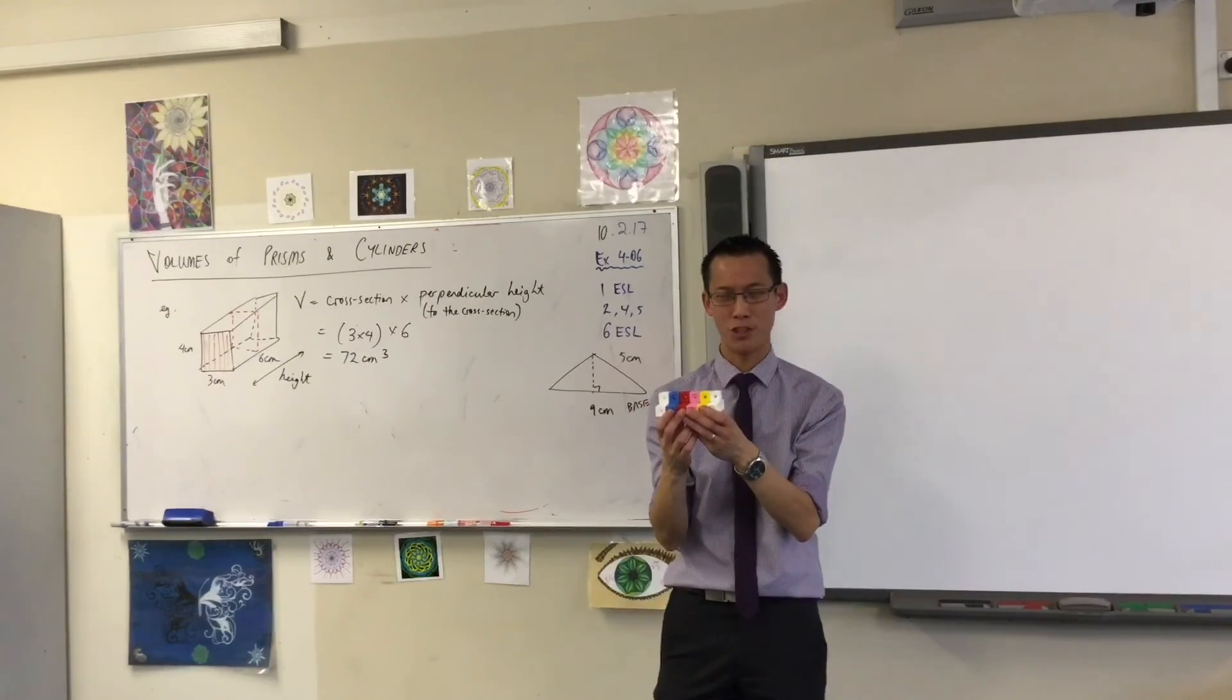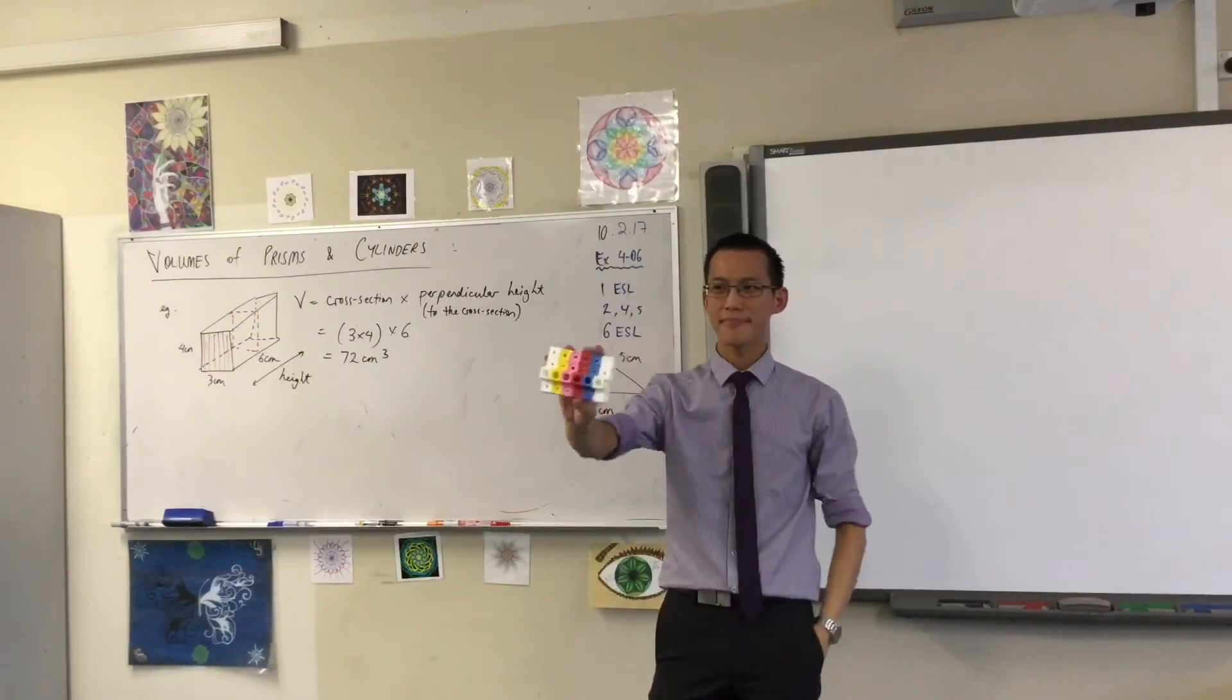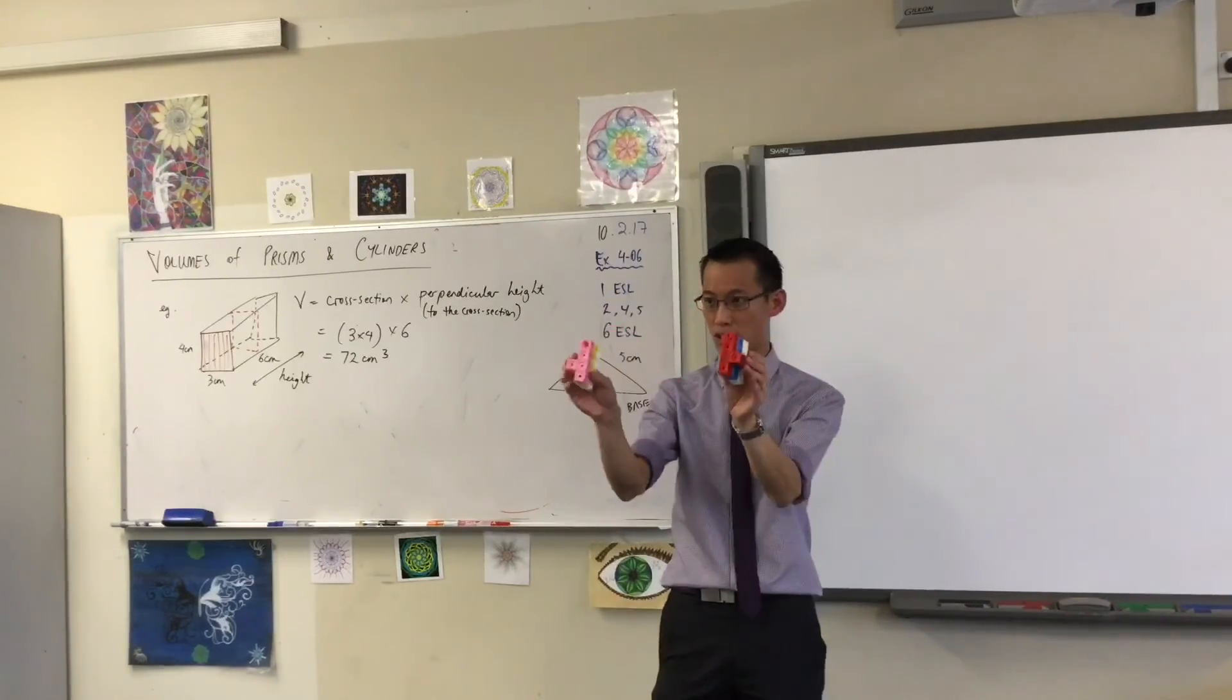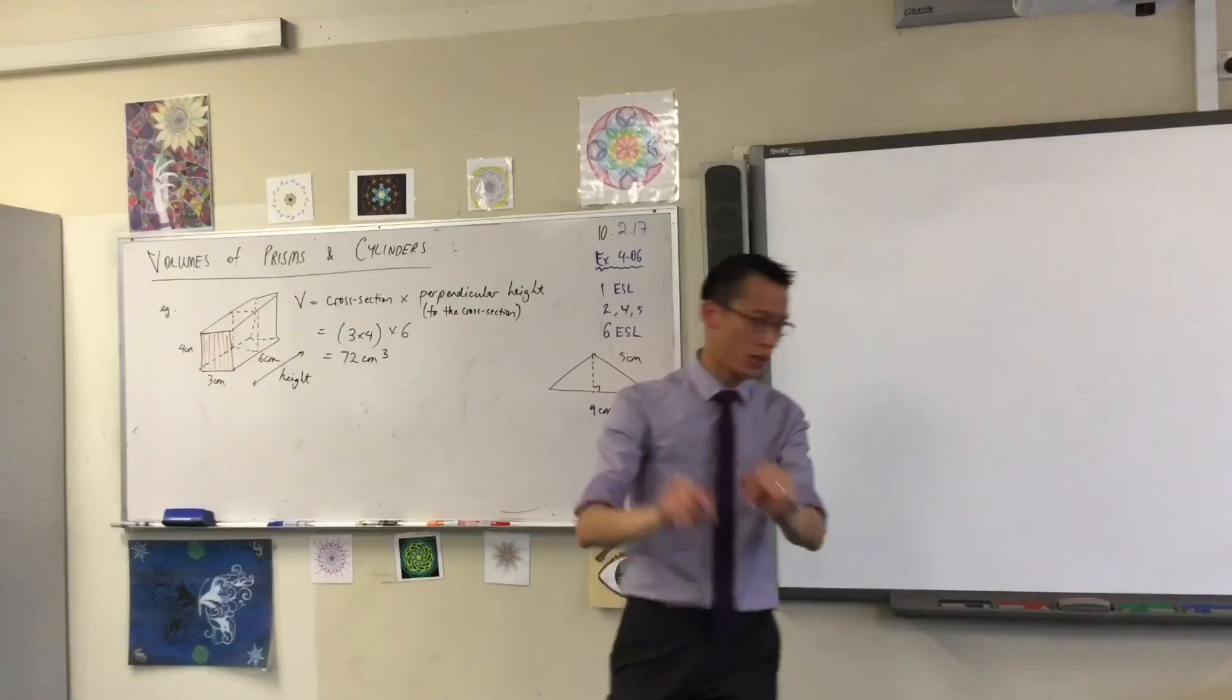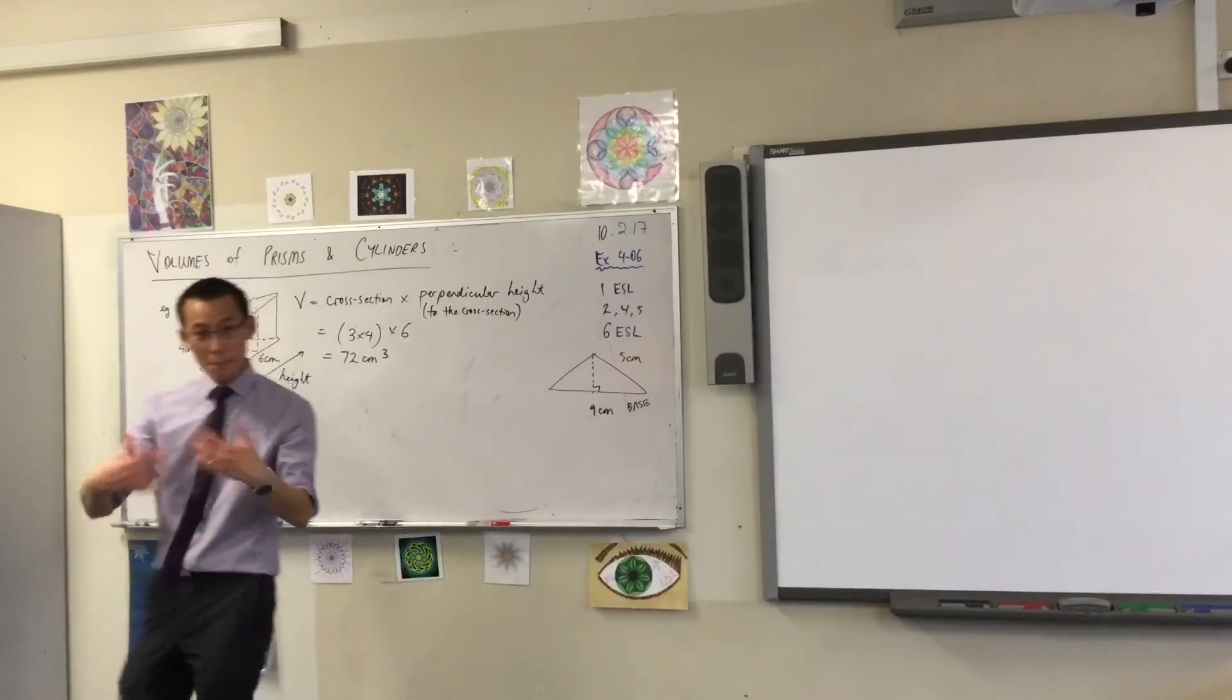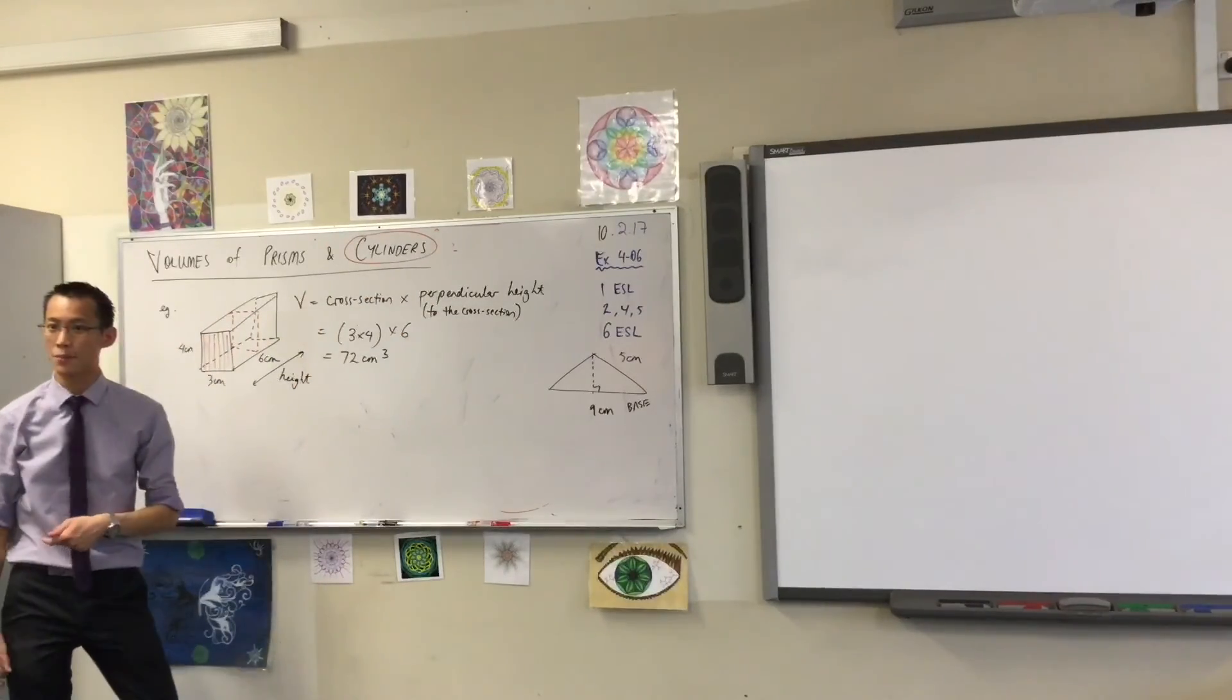Our very first lesson we said, so long as your cross section all the way is the same, it's a prism. Which is why, even though it sort of follows different rules, we are lumping together cylinders with prisms this time.